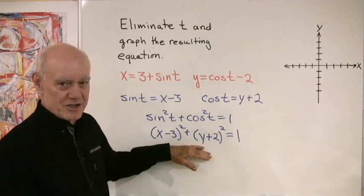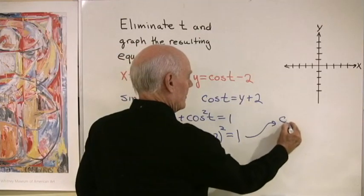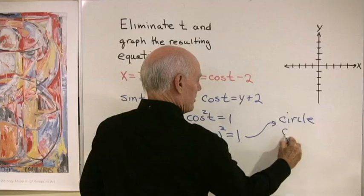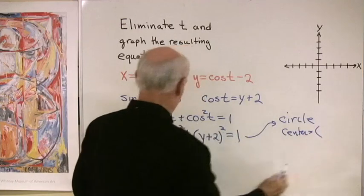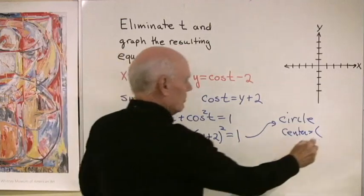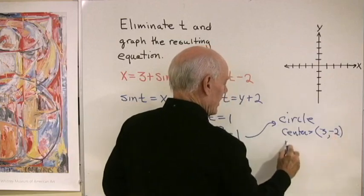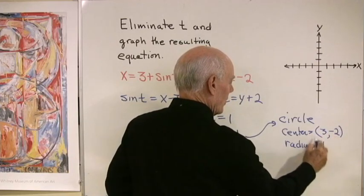Then from my algebra I recognize this as the equation of a circle. So this is going to be a circle with a center at positive 3 negative 2, and it's going to have a radius equal to 1.